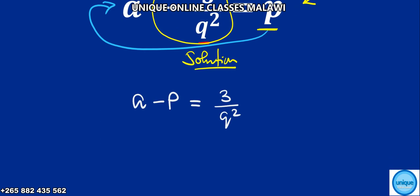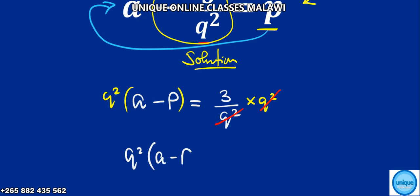The next thing we need to do is remove Q squared from the denominator — it should rather be in the numerator. So we're going to multiply both sides by Q squared. That Q squared and this Q squared cancel, remaining with Q squared times open bracket a minus P, is equal to 3.